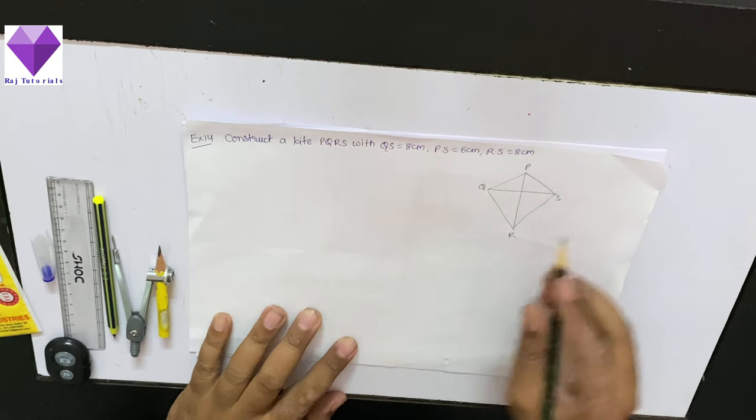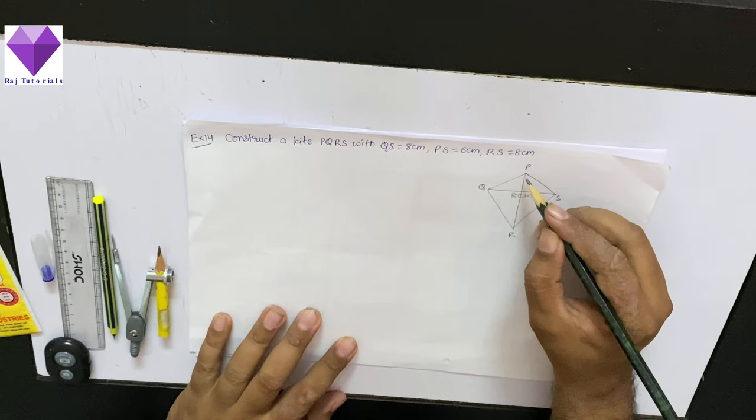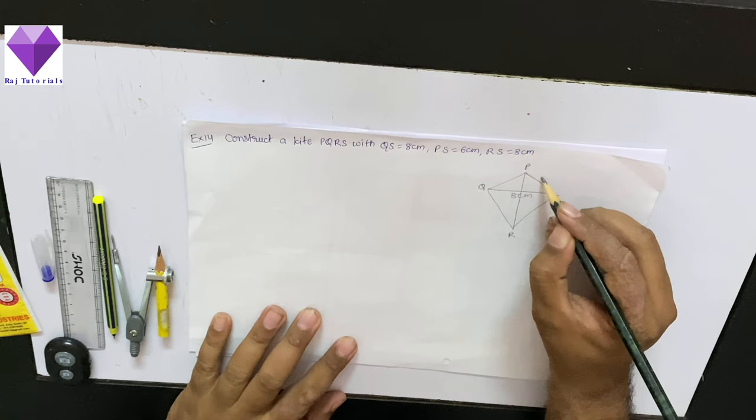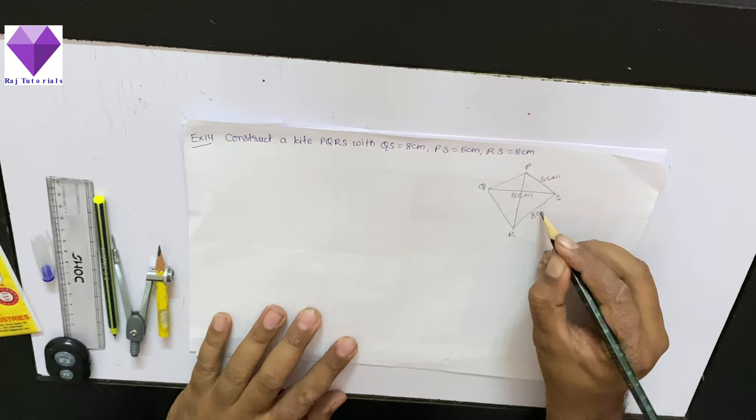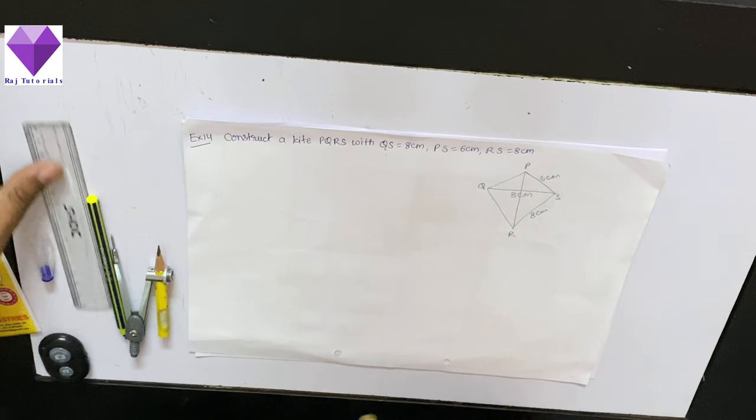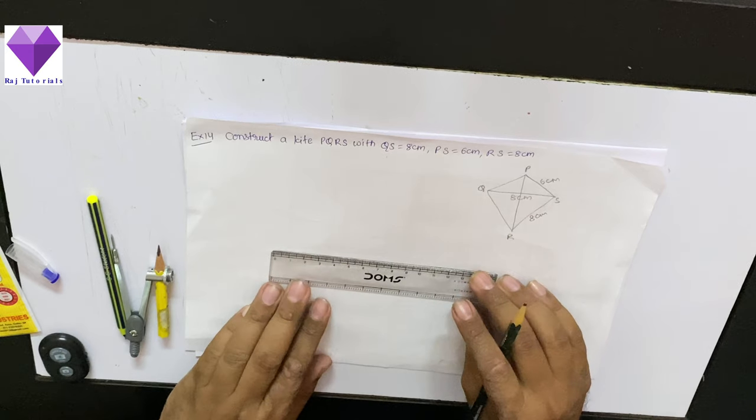Now QS is 8 cm, so one diagonal is 8 cm, PS is 6 cm, RS is 8 cm. To do this, first of all I will make the diagonal QS equal to 8 cm.